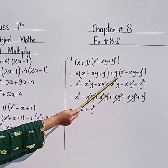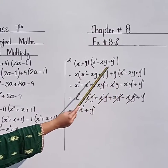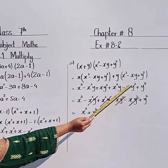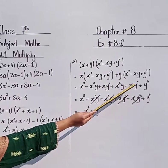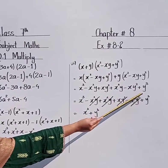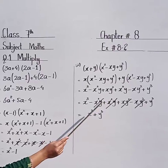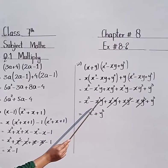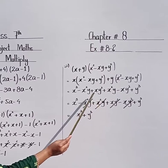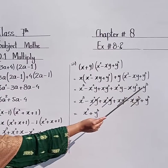Now multiply y inside the bracket. y multiplied by x squared is x squared y. Plus minus, so minus xy — y multiplied by y is y squared, giving minus x y squared. Plus y multiplied by y squared is y cubed. Arranging the terms: x cubed, minus x squared y, plus x squared y, plus x y squared, minus x y squared, plus y cubed.